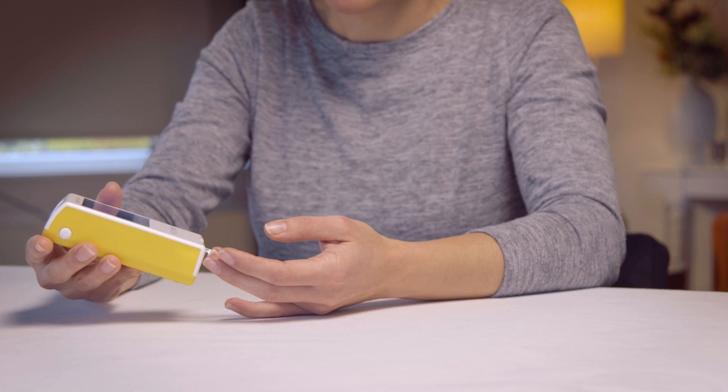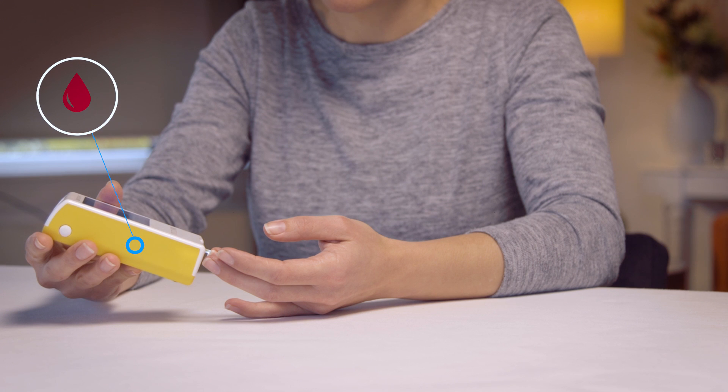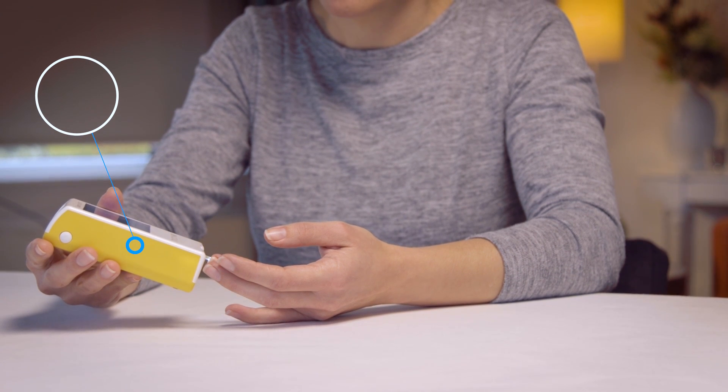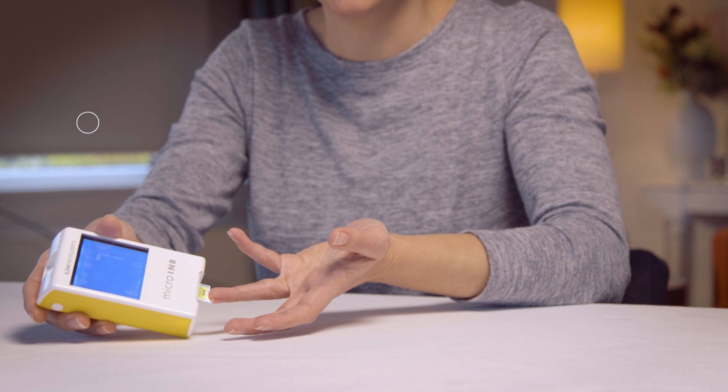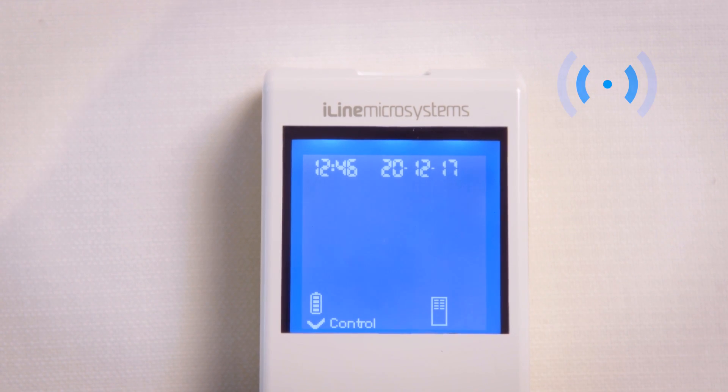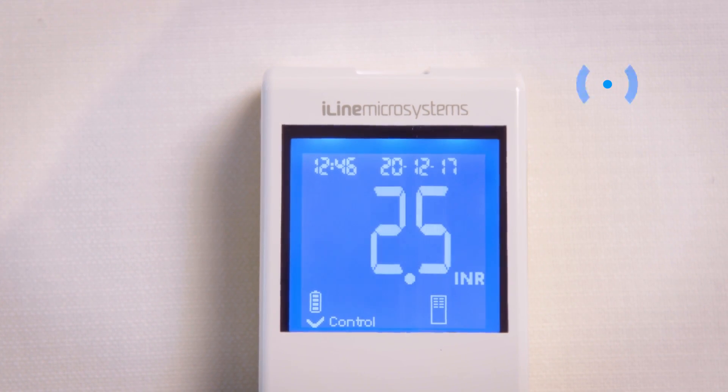Only the drop of blood must make contact with the chip. When the meter detects enough blood sample, it emits a beep tone and the drop symbol stops flashing. After the beep, gently remove the finger, leaving a small amount of blood at the entry channel.